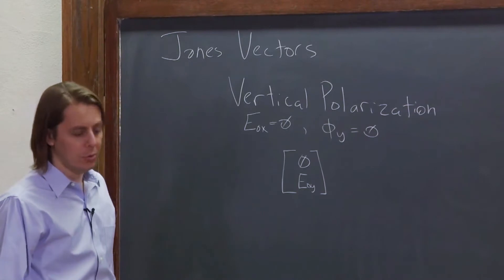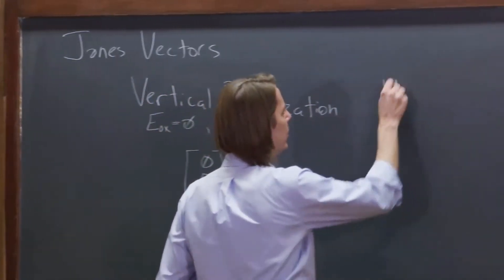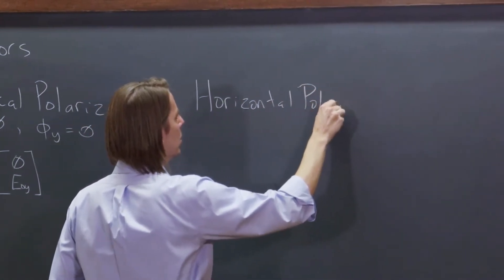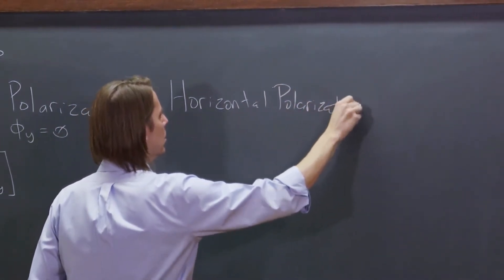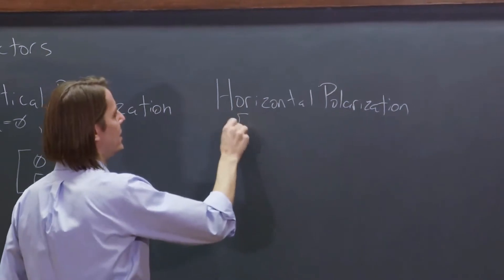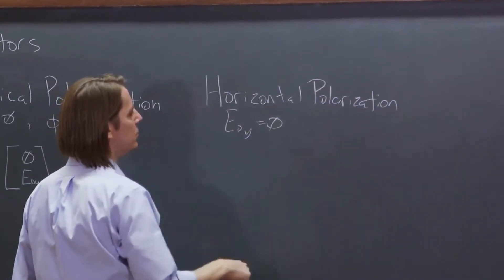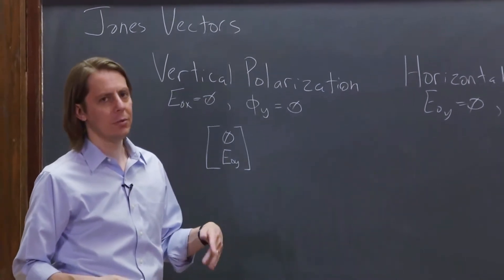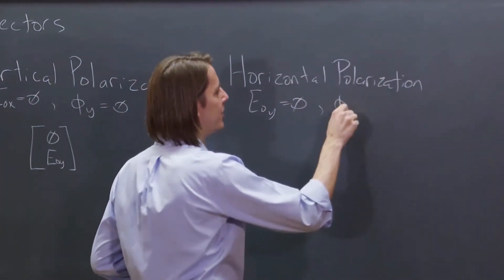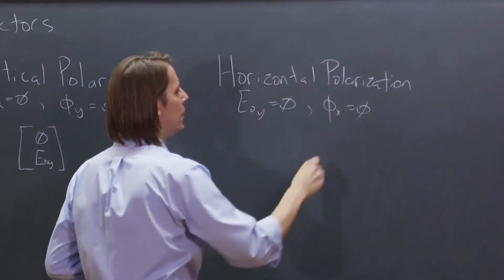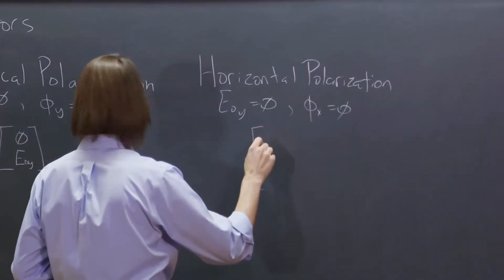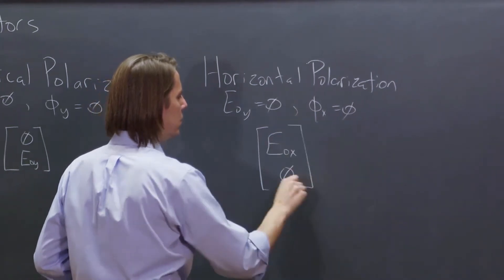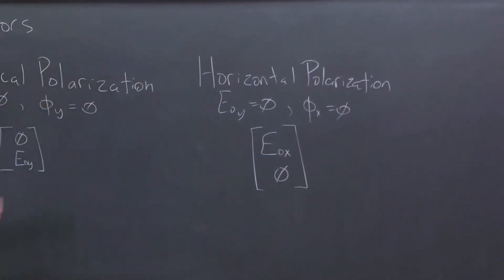We could also do horizontal polarization. In this case, it would make E not y equal to zero. And if we do that, and we just have E not x, the horizontal, if you only have one sinusoid, you don't need to keep up with phase. So let's go ahead and make phi x equal to zero. And then you can write the Jones vector as simply E not x over zero.